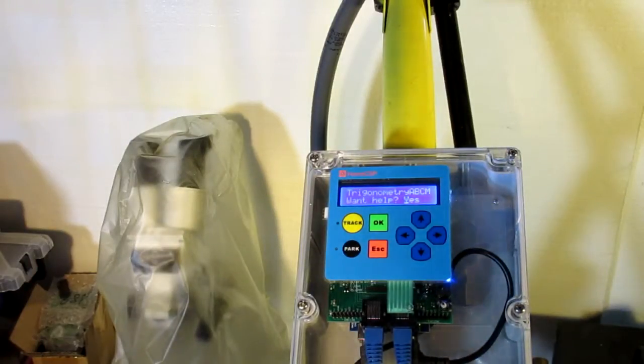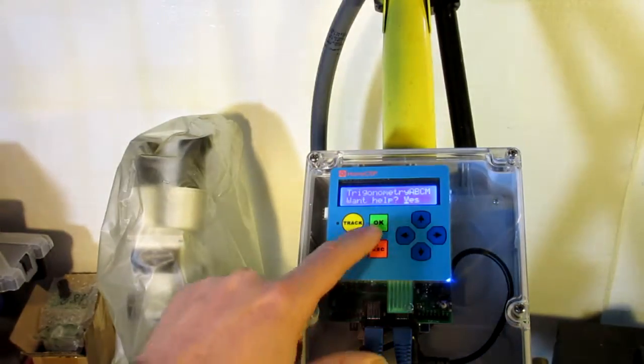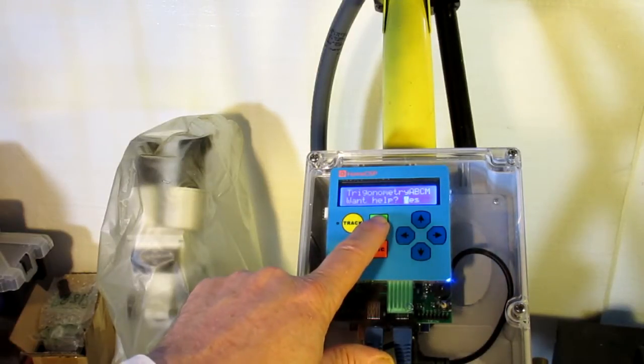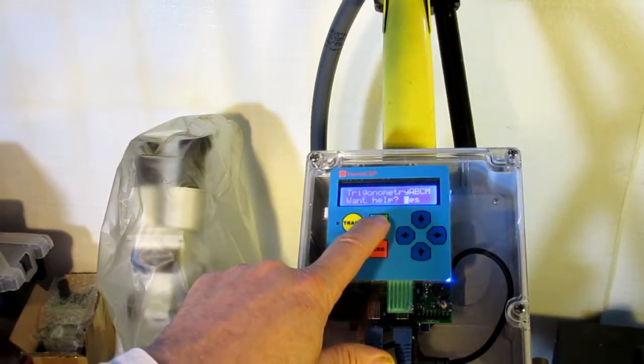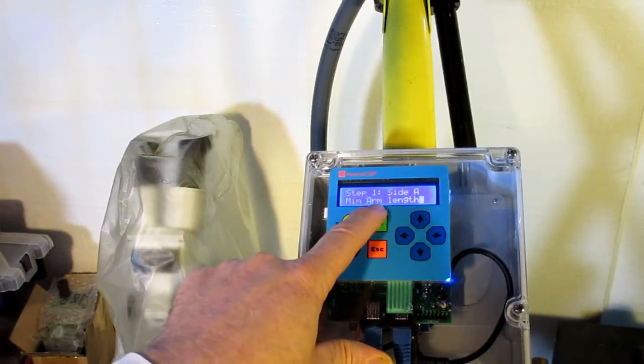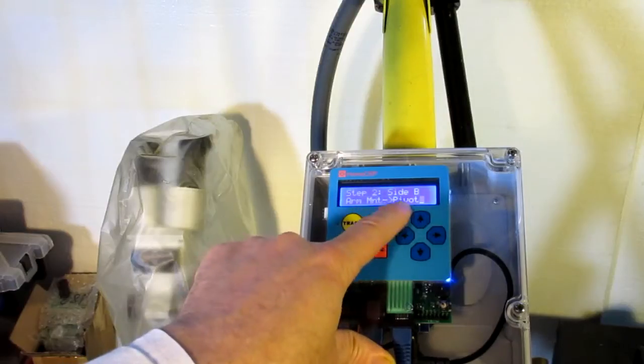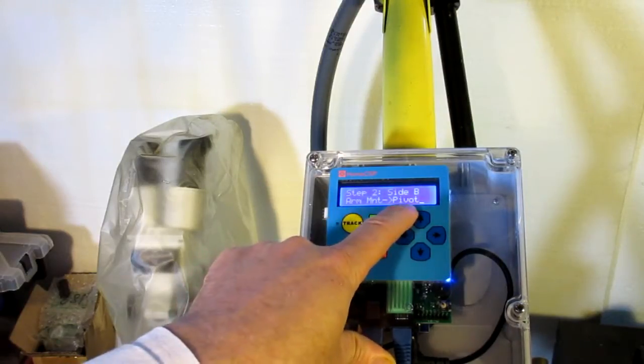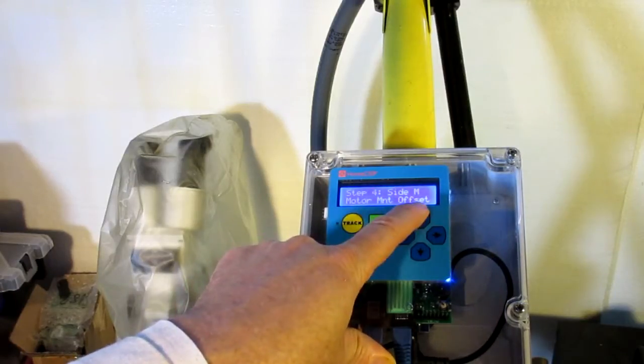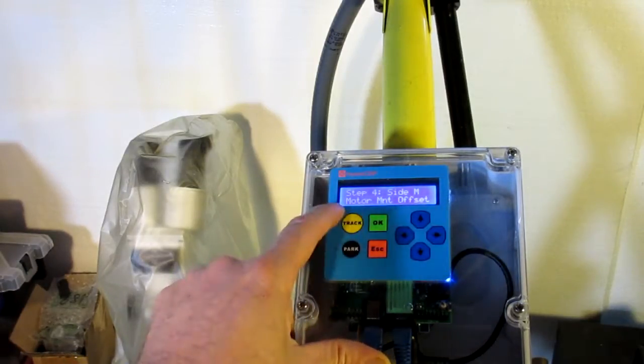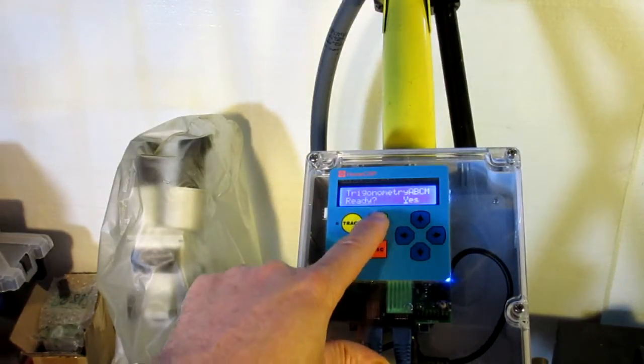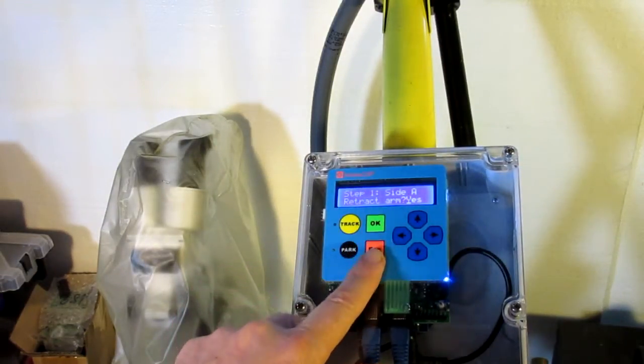So, now we're going to do the ABCM measurements for our elevation axis. So, as before, measuring side A, minimum arm length. B is that arm mount to the pivot point, i.e. our control arm length. C is the motor mount to that pivot point distance. And then our saddle clamp offset, as before. So, ready? Yep.